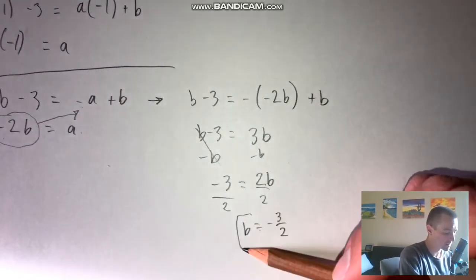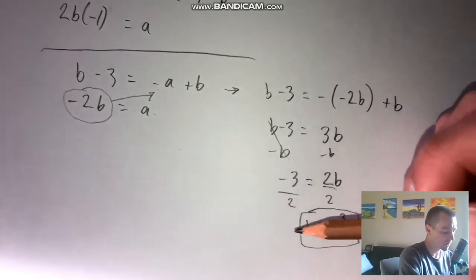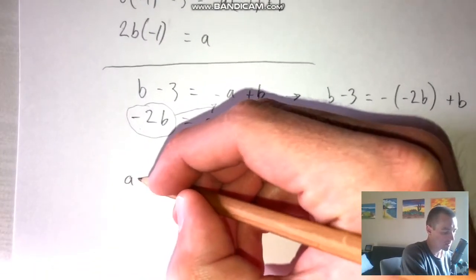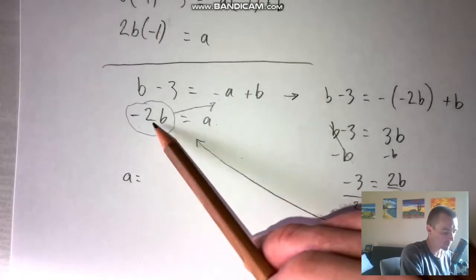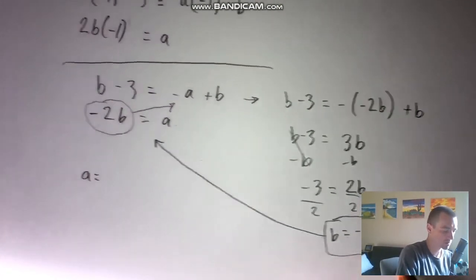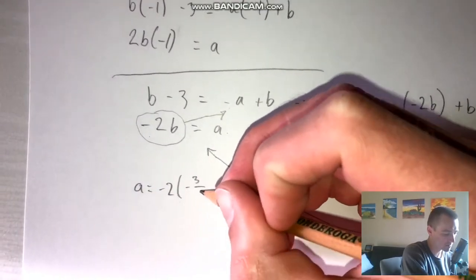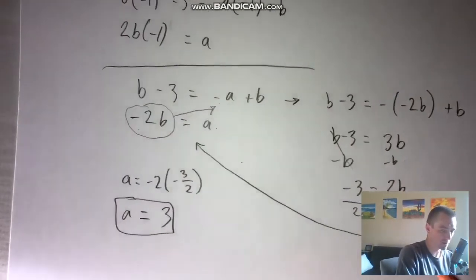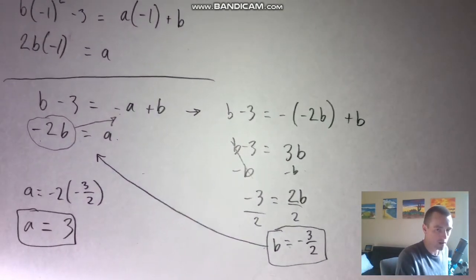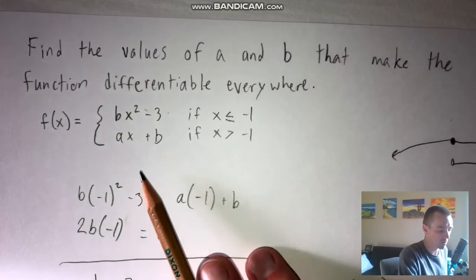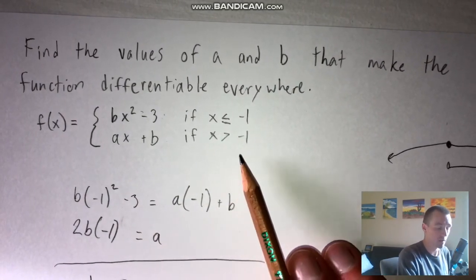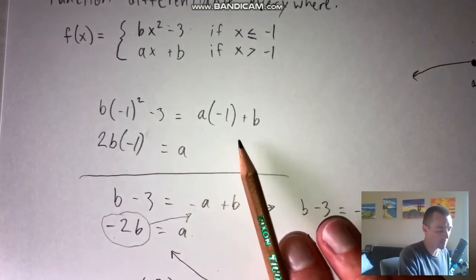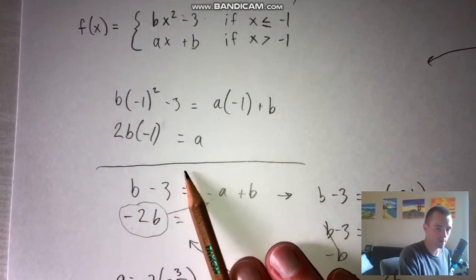Now we take b equals negative three halves and plug it into the equation a equals negative 2b. We get a equals negative two times negative three halves, which equals three. So a equals three and b equals negative three halves. These values ensure that each piece of the piecewise function has the same output when x is negative one, and also that they both have the same slope there, which we found by setting the pieces equal and setting their derivatives equal.